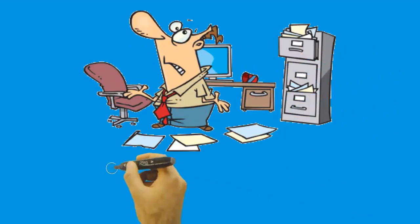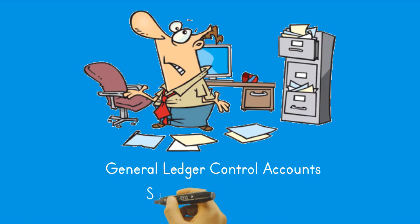General ledger control accounts and subsidiary ledgers. The general ledger is a special record where each account has a separate page or pages, organized into major sections just like the accounting equation: assets, liabilities, owner's equity, revenues, expenses, and draws. Simply stated, a general ledger is a book containing the summarized financial transactions and balances of the accounts for all of a business's assets, liabilities, equity, revenue, and expense accounts.